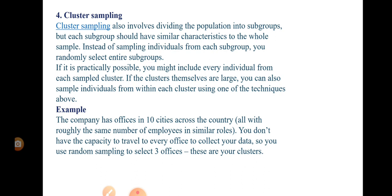In cluster sampling, the subgroups are already divided. In stratified sampling, we have to divide the subgroups ourselves based on general characteristics of the whole population. In cluster sampling, the population is already divided into clusters. That is known as cluster sampling, and this is the basic difference between stratified and cluster sampling.